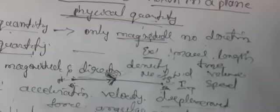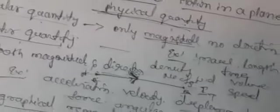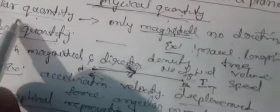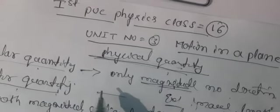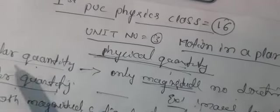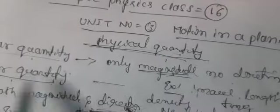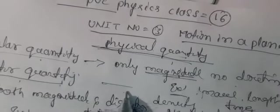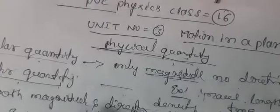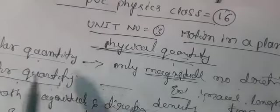Hello, continuing with the same class. In this class, we will look at the difference between a scalar quantity and a vector quantity. First, the definition of scalar: a scalar is a physical quantity that has only magnitude and no direction. That is called a scalar quantity. And for vector: a vector is a physical quantity that consists of both magnitude and direction. That is called a vector quantity.